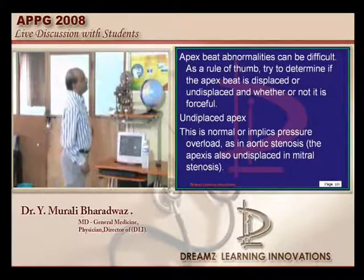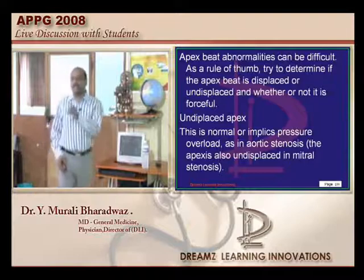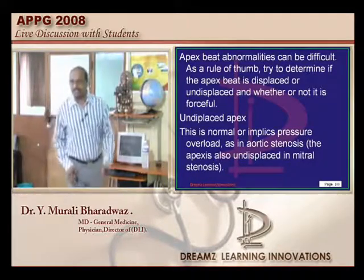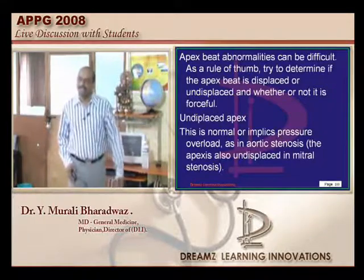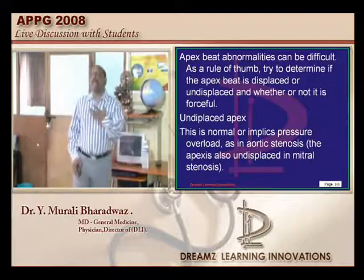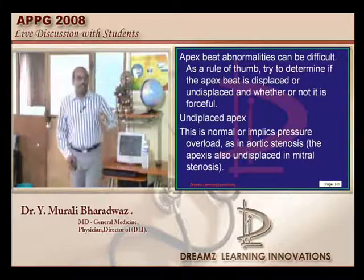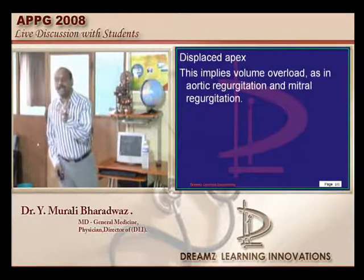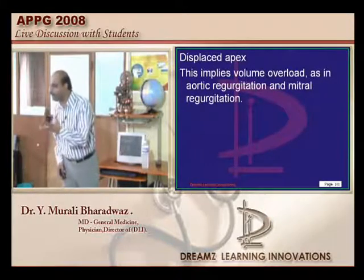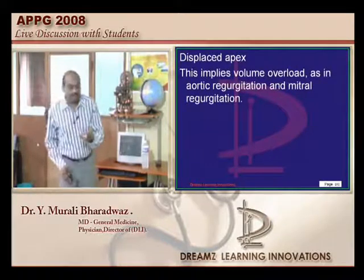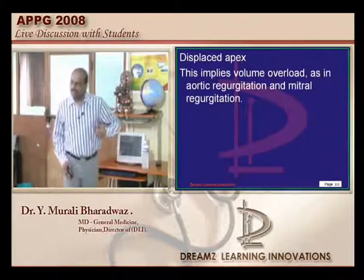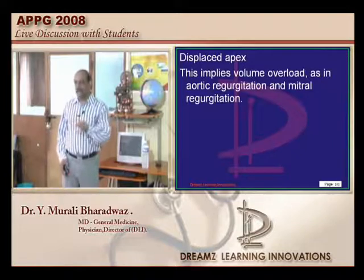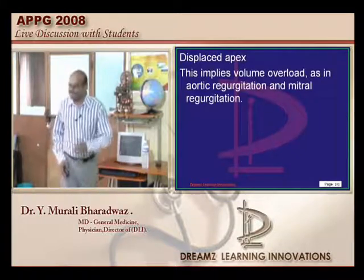Heaving apex is a sign of left ventricular hypertrophy, which is present in aortic stenosis. However, an outwardly displaced apex is not typically a feature of aortic stenosis since you have a hypertrophic, not dilated, left ventricle - unless there is concomitant aortic regurgitation causing dilation.